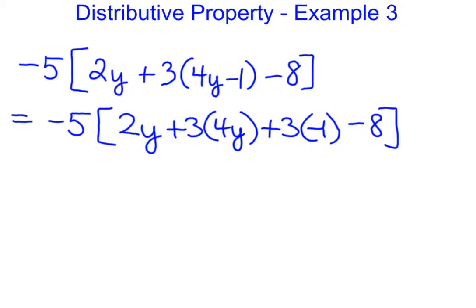So moving along with this question, the minus 5 or the negative 5 that's in front of the bracket stays put. Let's actually do the multiplying now inside of the brackets. So that 2y stays put. 3 times 4y is 12y. 3 times negative 1 is negative 3. And again, we just have this minus 8.